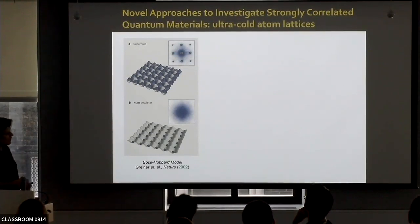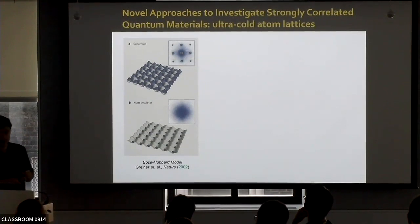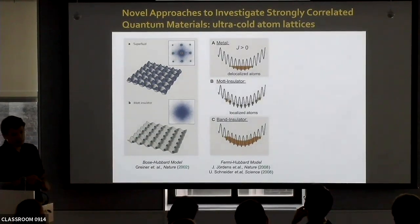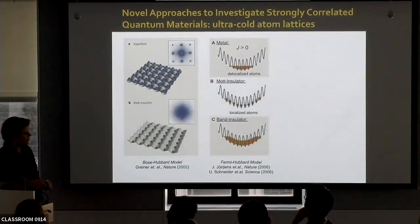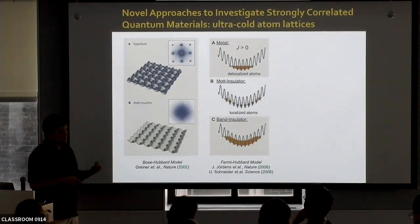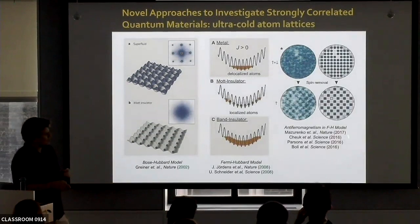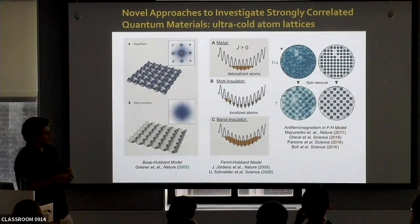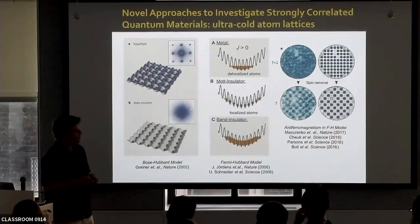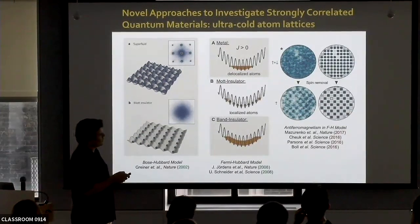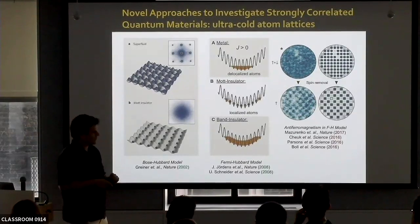This was done initially with bosonic atoms — integer spin. A few years later they did this with fermionic atoms, realizing the Fermi-Hubbard model. The state of the art in this field is such that recently, several groups were able to demonstrate short-range antiferromagnetism in this Fermi-Hubbard model — they could see antiferromagnetic order over at least a few lattice sites.